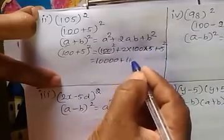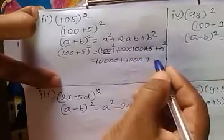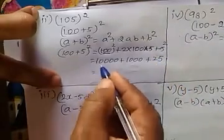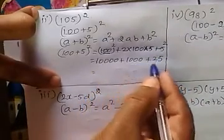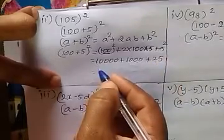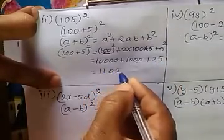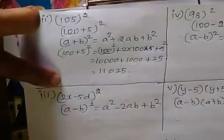100 squared is 10,000. 2 into 100 into 5 = 1000. 5 squared is 25. So adding: 10,000 + 1000 + 25 = 11,025. Next, third sum: (2x − 5d) whole squared.